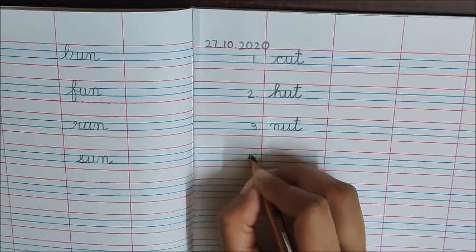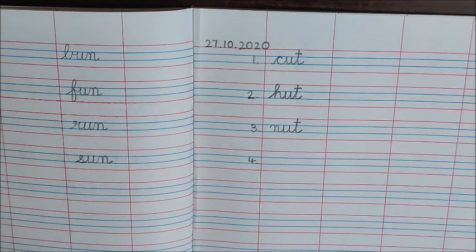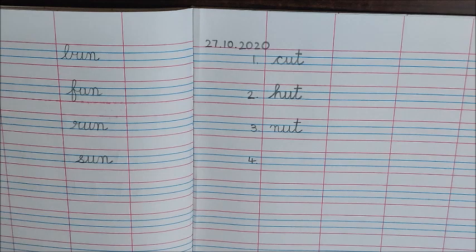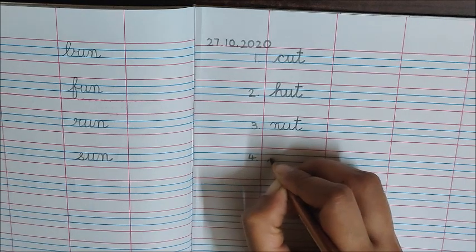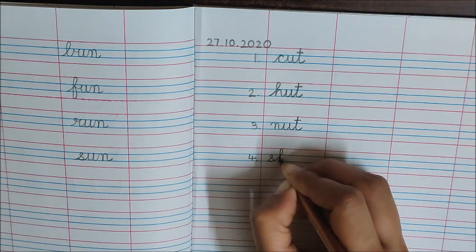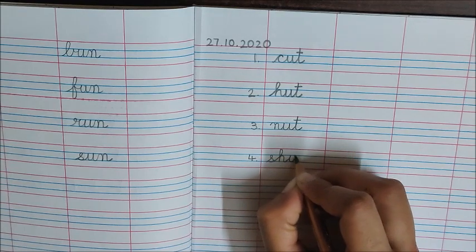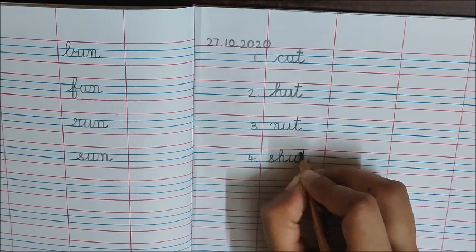Now write down four dot. The next word is shut. Come on children, think. What is the first sound? Think. Have you written? Good. The first sound is shh. Which two letters make shh? S and H. Shh, A, T — shut.